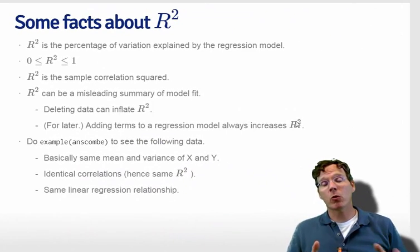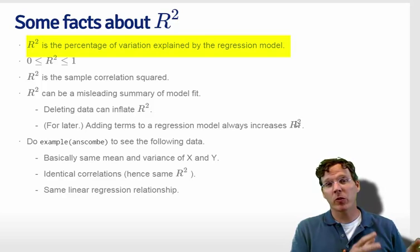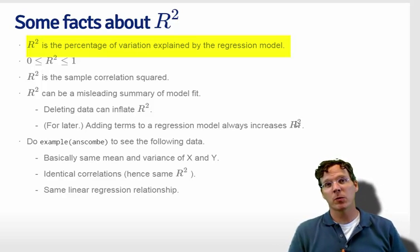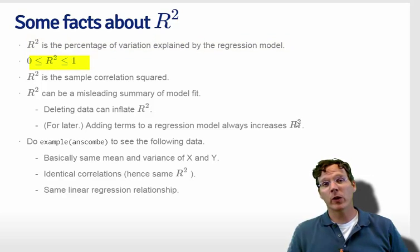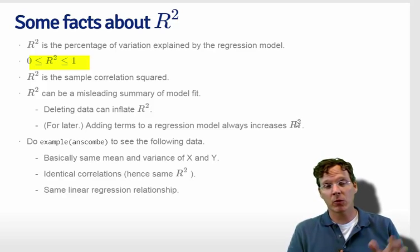Some facts about r squared that you need to keep in mind. Just to remind you, r squared is the percentage of the variation in the response explained by the linear relationship with the predictor. r squared has to be between 0 and 1 because the regression variability and the error variability, the sums of squares, add up to the total sums of squares, and they're all positive, so that forces r squared to be between 0 and 1.